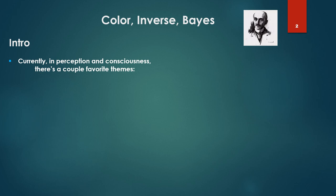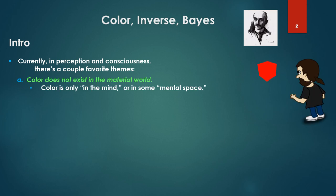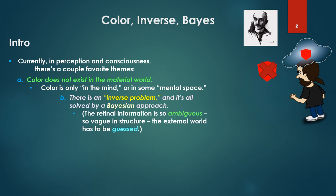So currently in perception and consciousness, there's a couple favorite themes. The first is color does not exist in the material world. Color is rather only in the mind, in some mental space. And secondly, there is an inverse problem and it's all solved by a Bayesian or probabilistic approach because the retinal information, light information in the retina, is so ambiguous, so vague in structure, the external world has to be guessed.